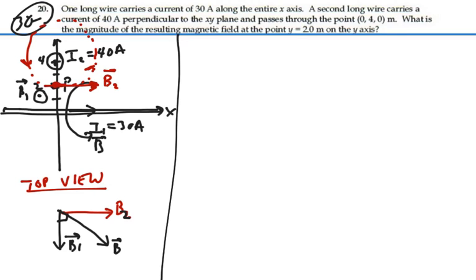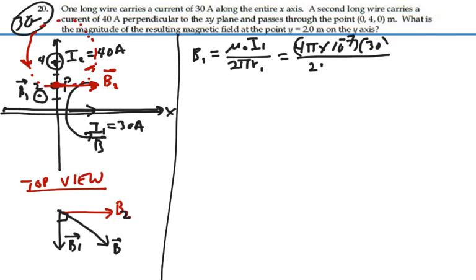Okay, let's find the magnitude of these two magnetic fields first. Well, B1, according to Ampere's law, will be mu-naught I1 over 2 pi R1. And that's going to be equal to 4 pi times 10 to the minus 7 times I1, which is 30 amps, over 2 pi.